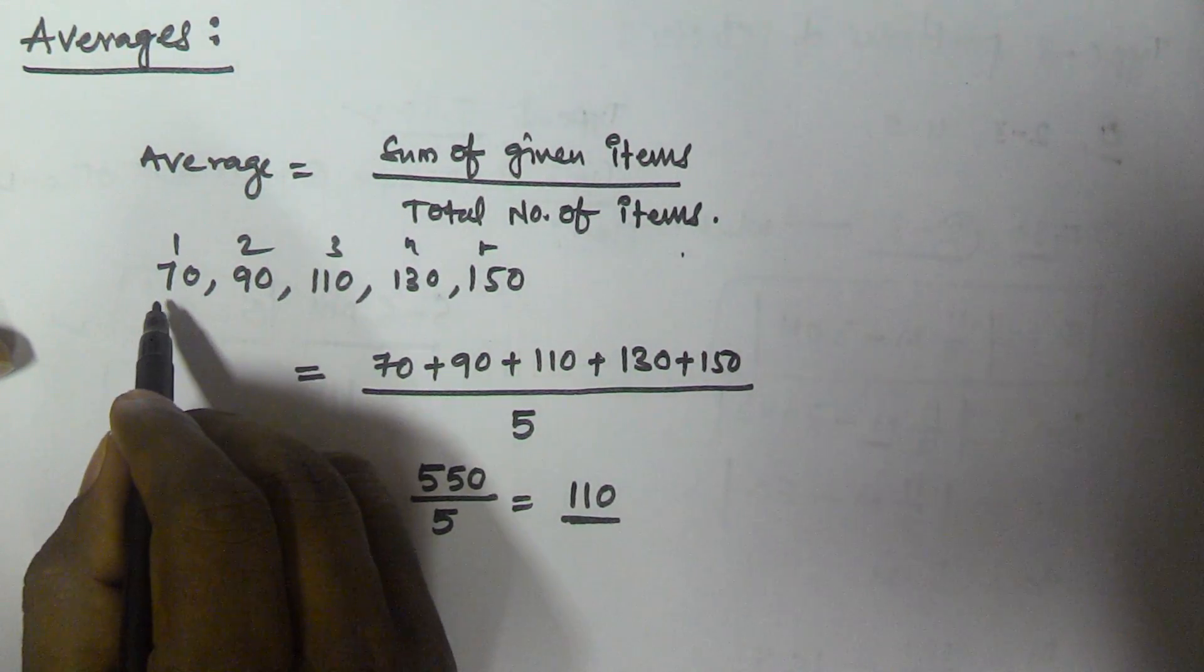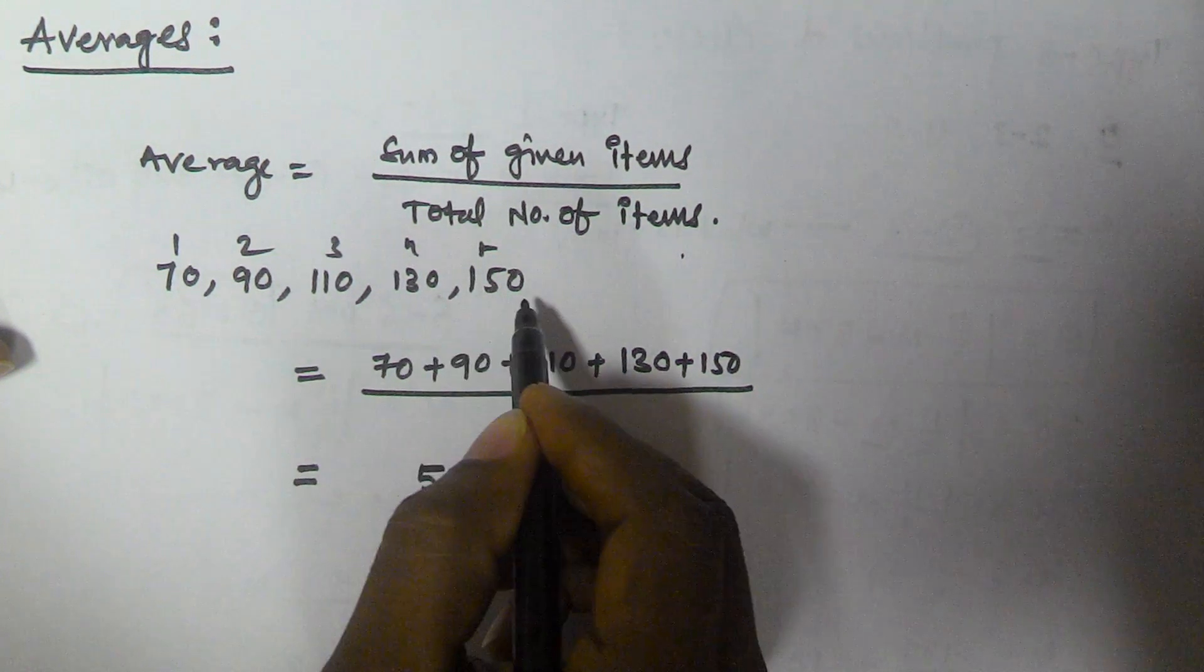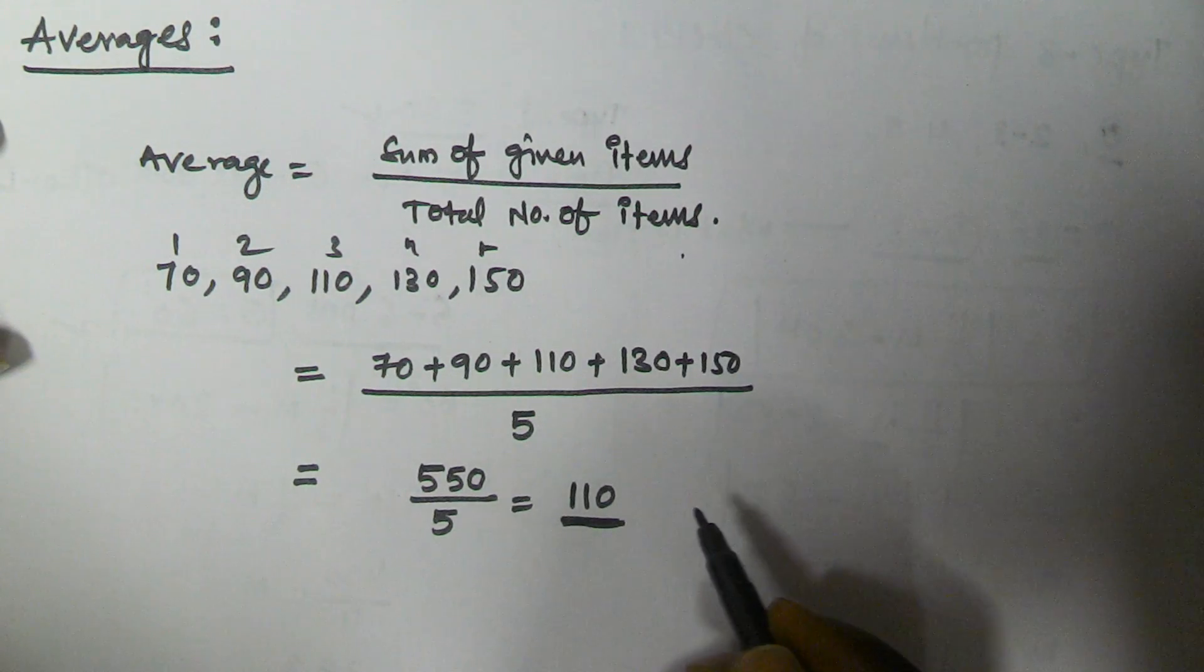So the average of these given items - 70, 90, 110, 130, 150 - is 110. I hope you got this.